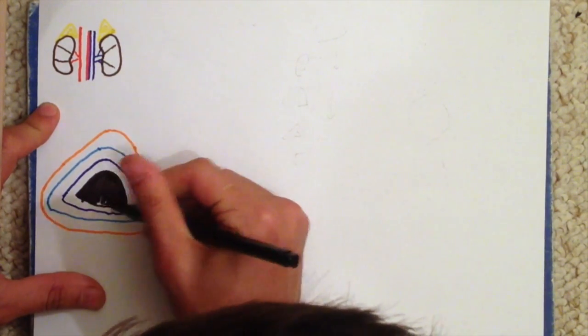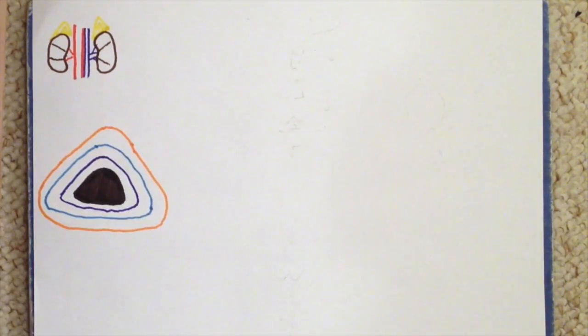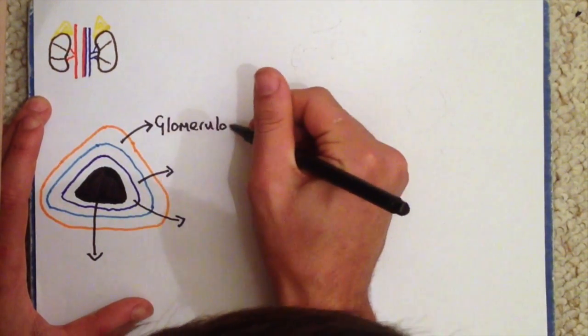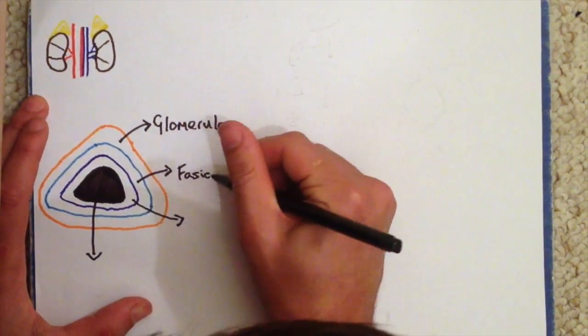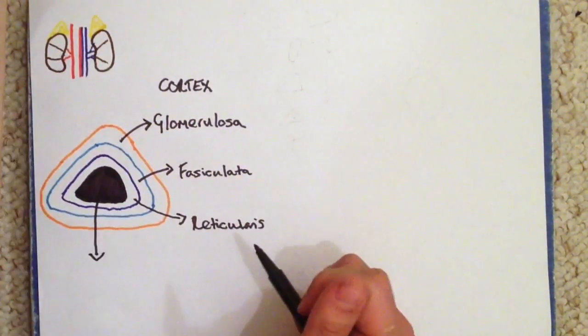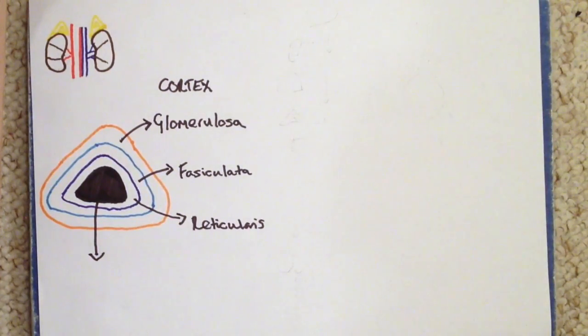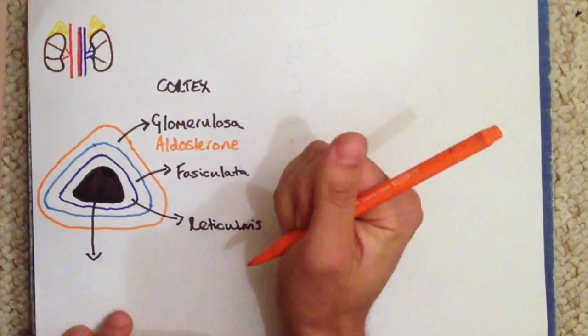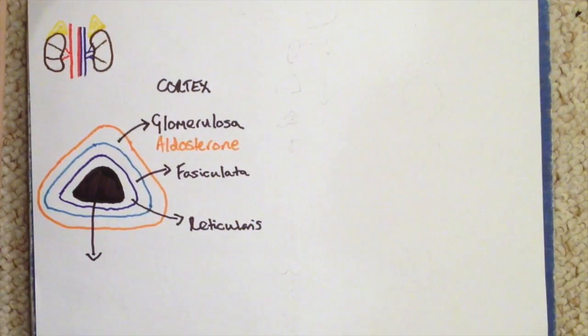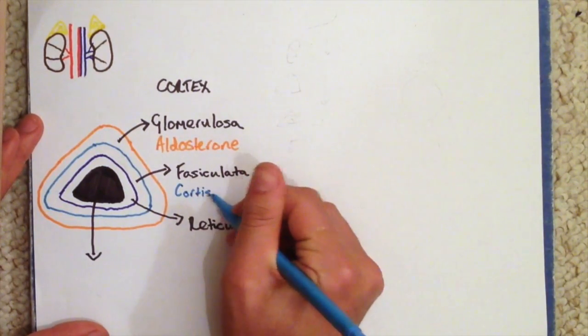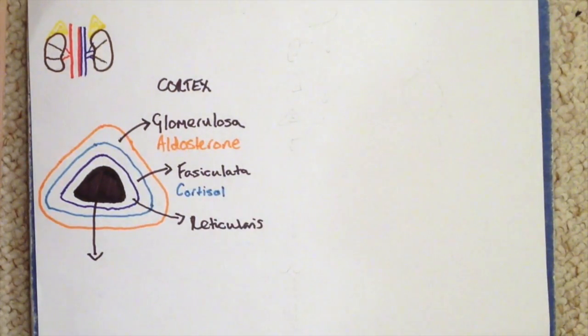So the first outer layer of the cortex is known as the zona glomerulosa. The layer after that is called the zona fasciculata, and the final layer of the cortex is known as the zona reticularis. The zona glomerulosa secretes a mineralocorticoid known as aldosterone. The zona fasciculata secretes a glucocorticoid known as cortisol, and the zona reticularis secretes androgens or sex hormones.